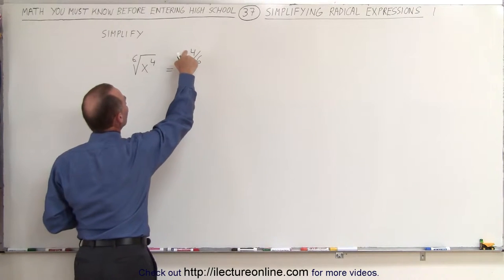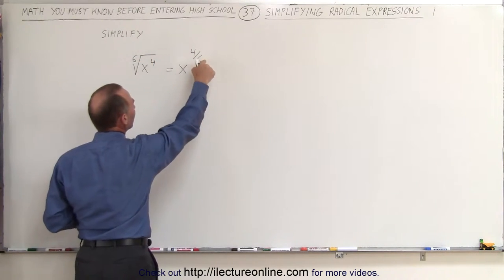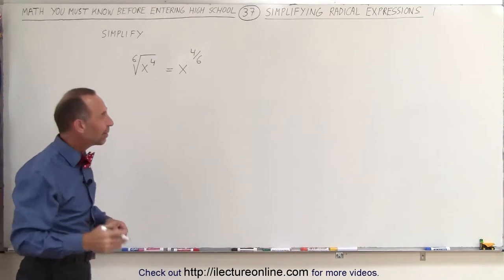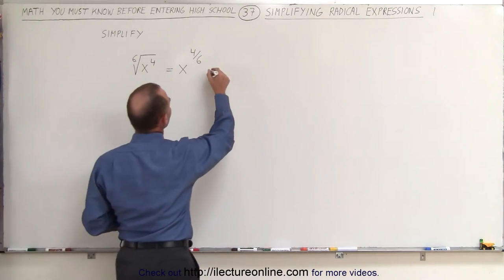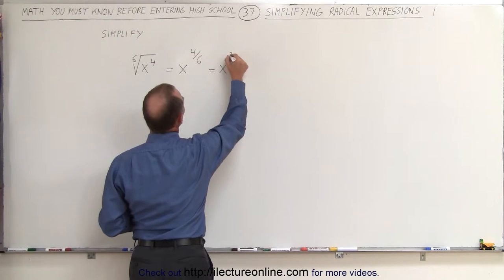The 4 becomes the numerator and the root 6, the 6 root becomes the denominator. Then we simplify that. So this can be written as x to the two-thirds.